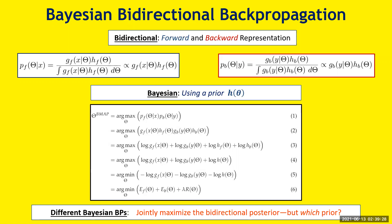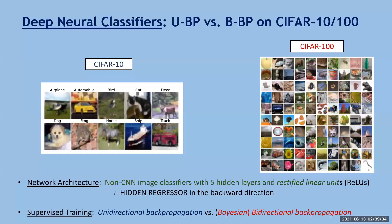Courtesy of Bayes' theorem, we end up with a joint optimization of the forward posterior and the backward posterior. We're going to look at that for the two main test cases: CIFAR-10 and the much more complicated case of CIFAR-100, for a multilayer network using ReLU hidden units.